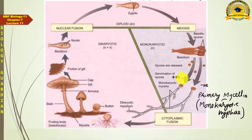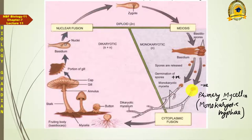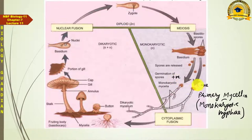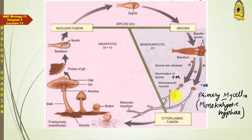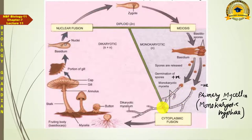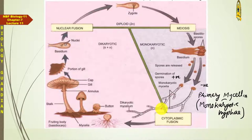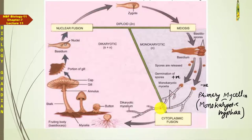These two basidiospores were genetically different but compatible, as they belong to the same species. One is considered positive and one negative. You can see that at one stage, fertilization occurs between these two primary mycelia consisting of monokaryotic hyphae.